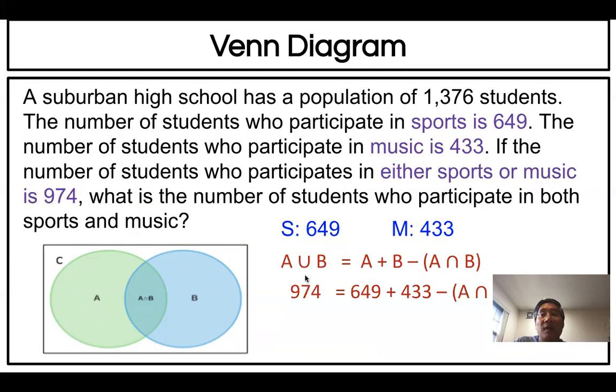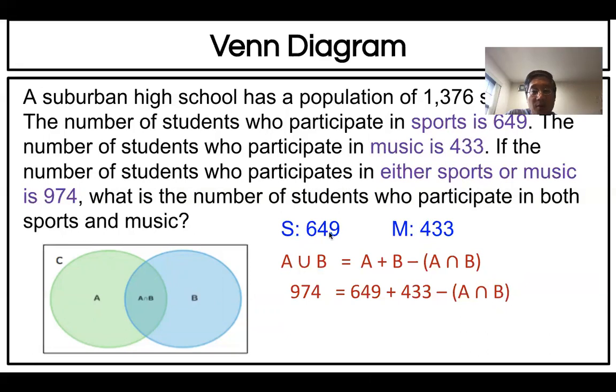Now let's write down the formula. A union B is A plus B minus intersection. We can use S and M, doesn't matter. What is A union B? Here it says 974. 974 equals 649 plus 433 minus intersection.